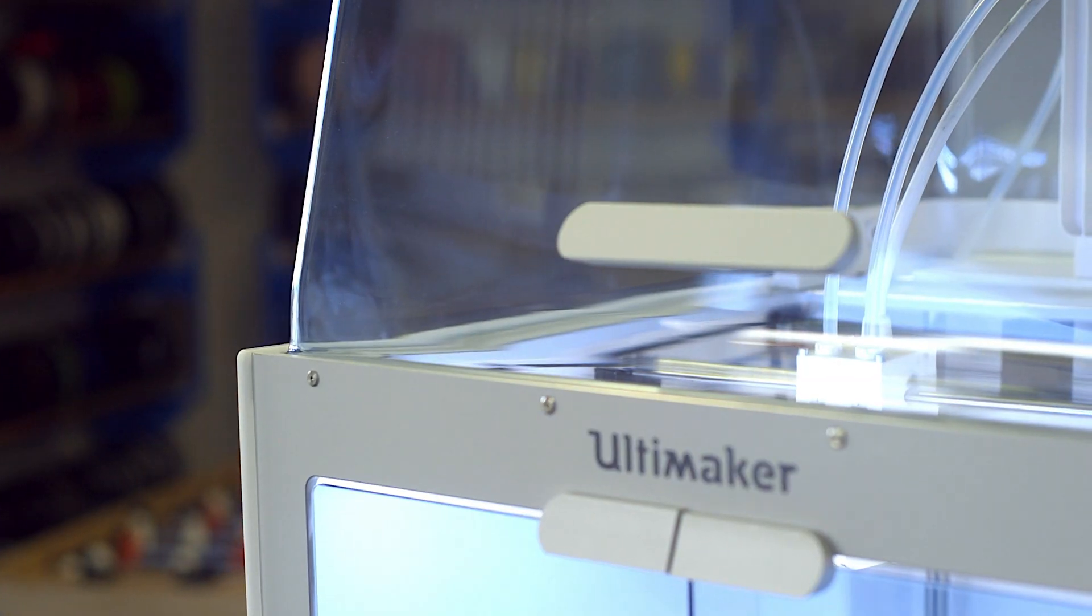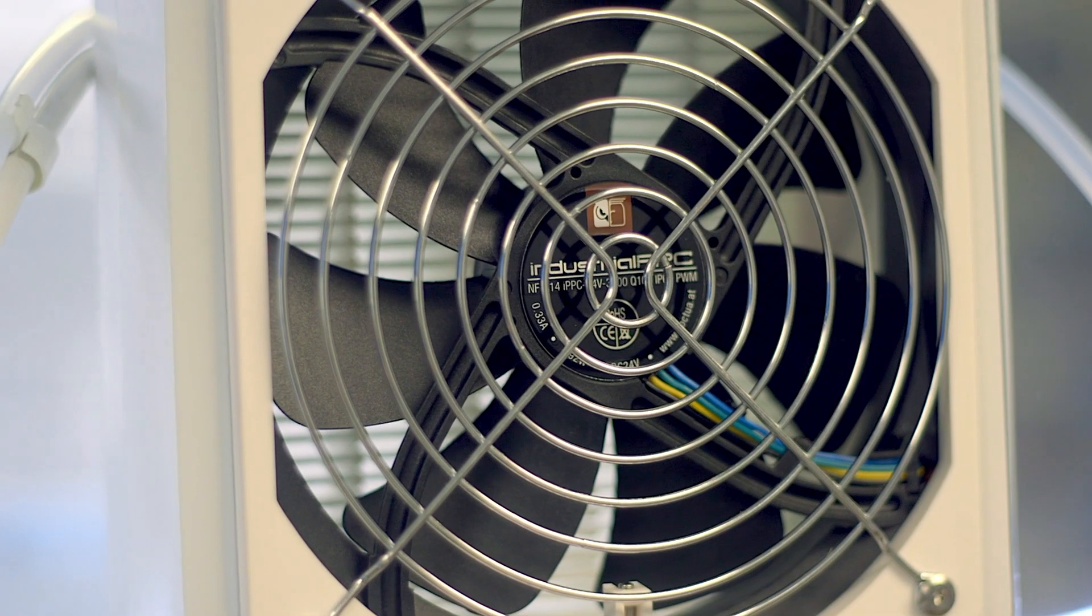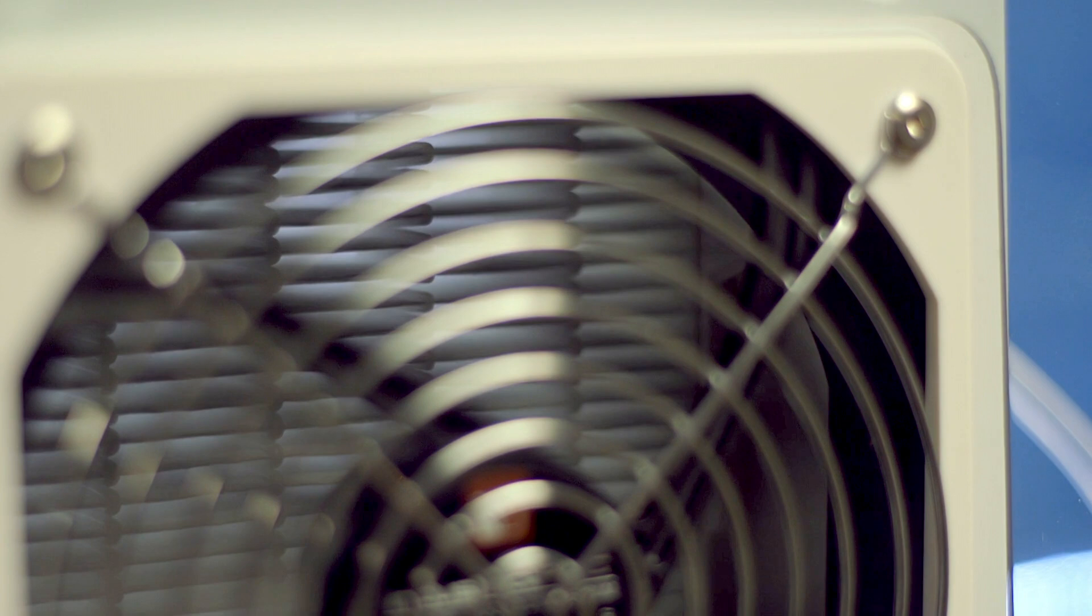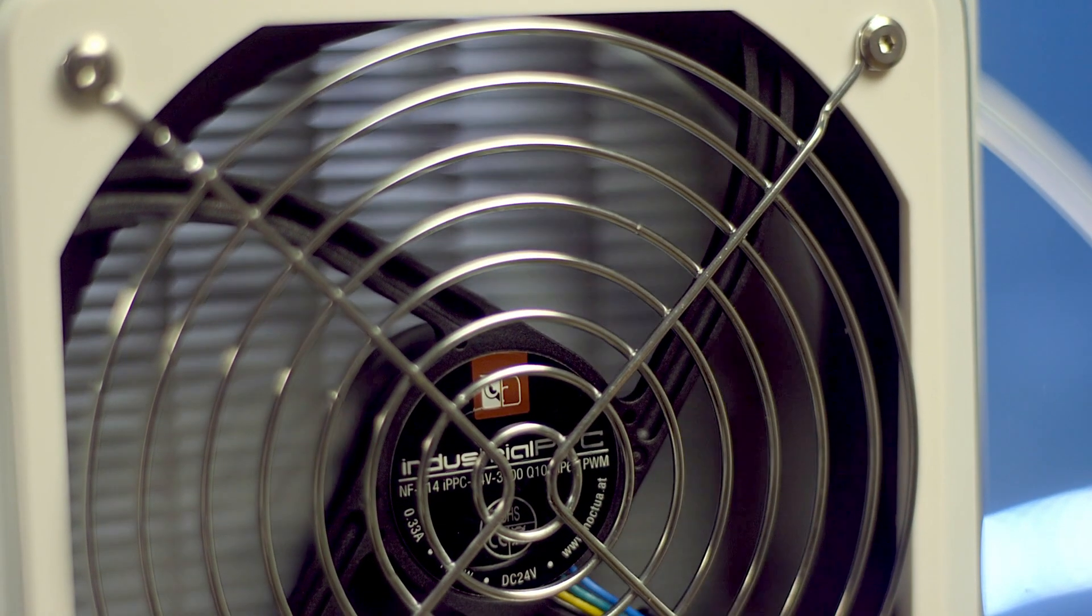To help keep temperatures, fumes, and any unwanted ultrafine particles contained, Ultimaker developed the Air Manager. With an EPA filter mounted behind a controlled fan, up to 95% of ultrafine particles are filtered out of the air while controlling the airflow for optimal print quality.